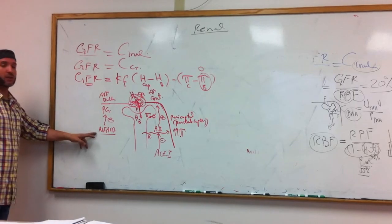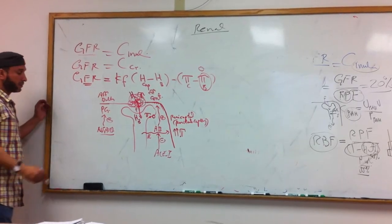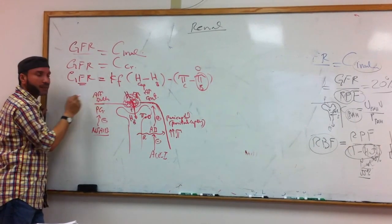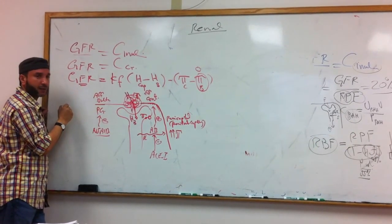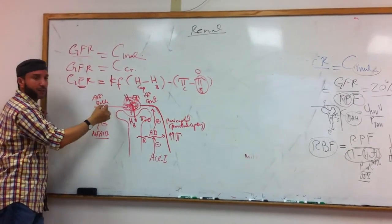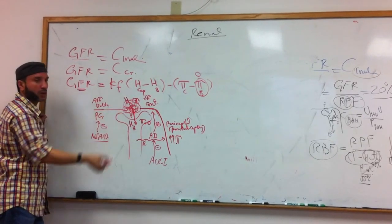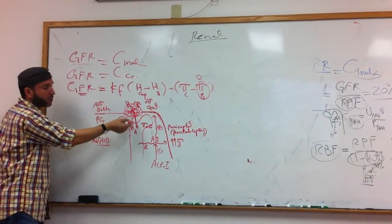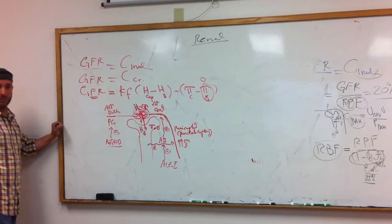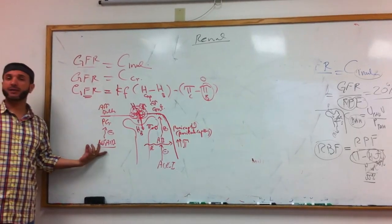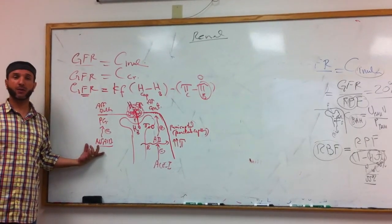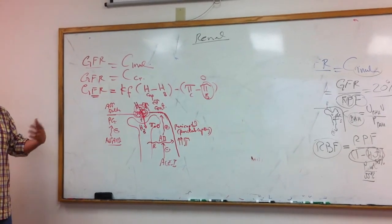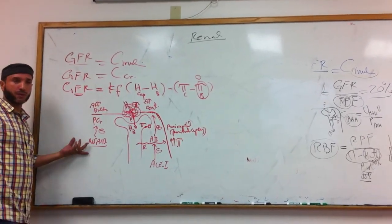Now back to the effect of NSAIDs. NSAIDs inhibit prostaglandins, so we constrict the afferent. We have less blood supply or blood flow to the glomerulus — less blood flow to the glomerulus means less filtration. In the long run, NSAIDs are not good; they can cause renal failure. That's why NSAIDs can be a cause of renal problems.